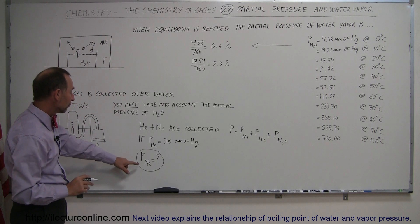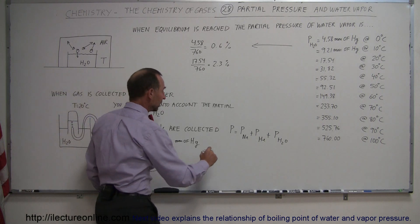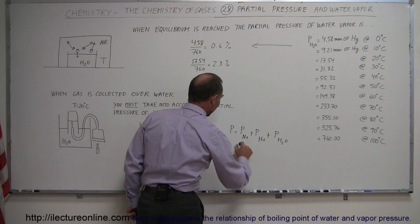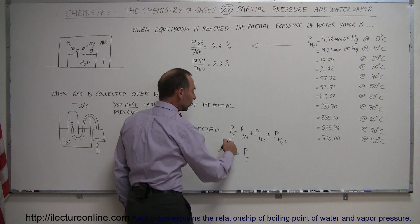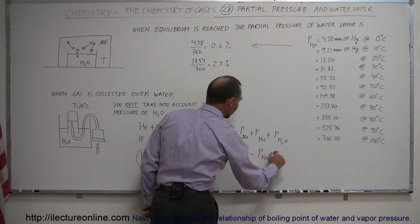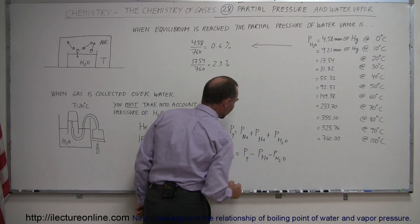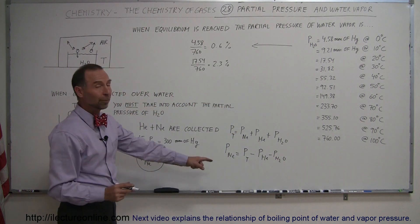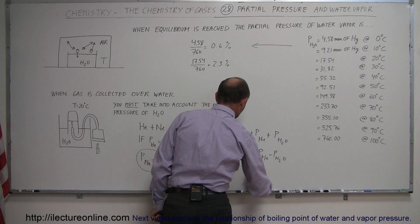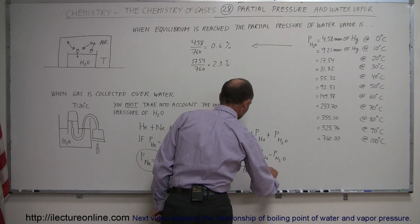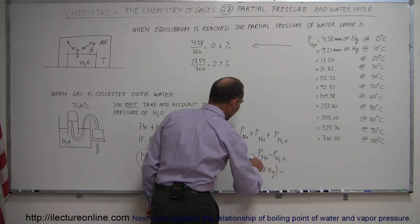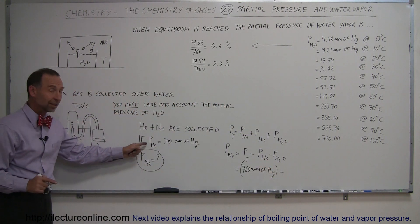And since we're looking for the partial pressure of neon, we can then say that the partial pressure of neon is equal to the total pressure minus the two other ones that go to the other side. So minus the pressure of helium minus the pressure of water vapor. Now total pressure, let's say we're at one atmosphere, that would be equal to 760 millimeters of mercury for the total pressure.